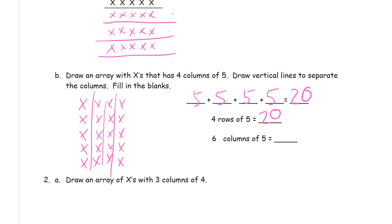What would six columns of five be? Hmm. Well I have to think I need two more fives, right? Which is a 10. So that would be 30. Twenty plus ten more would be 30.